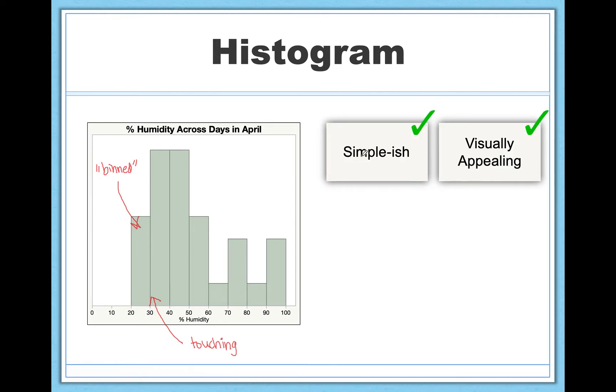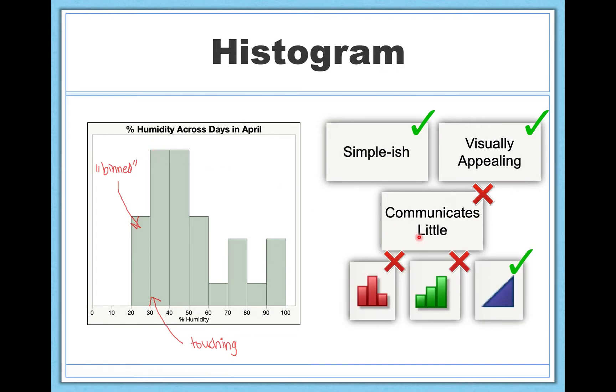So in terms of strengths, I think the histogram is simple-ish, right? It's pretty simple to understand. Most people get it. But I did have to tell you a thing or two about it that you probably wouldn't know automatically just by looking at it. I would also say it's visually appealing. But again, it communicates little, just frequency information, how many are within each bin. But we also have this benefit for the first time so far of being able to graph interval or ratio scale data. It's not appropriate for nominal or ordinal scale data.